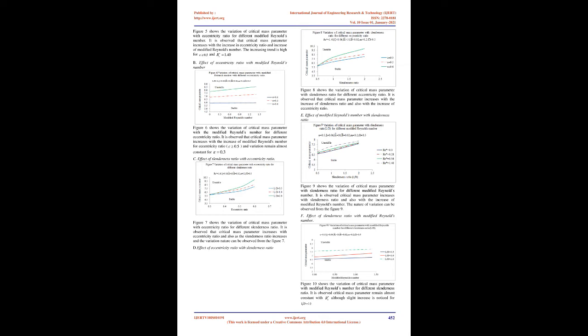In both cases with the same parameter values, the trend of the trajectory is towards point stability (Figure 4). Figure 5 shows the variation of critical mass parameter with eccentricity ratio for different modified Reynolds numbers. It is observed that the critical mass parameter increases with the increase in eccentricity ratio and with the increase of modified Reynolds number. The increasing trend is high for Re* = 5.0.